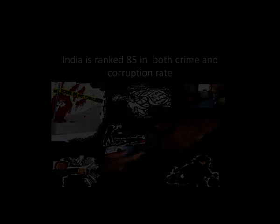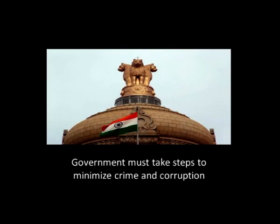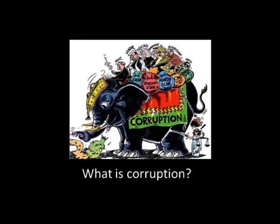As of now, India is ranked 85 in the world for both crime and corruption rate. Both crime and corruption are increasing day by day in India, and eradicating these practices is a tedious task. The government and concerned officials must take necessary steps to minimize the adverse effects of these problems. We shall cover: crime and its types, corruption, nature of corruption, consequences, and the changing profile of both crime and corruption.